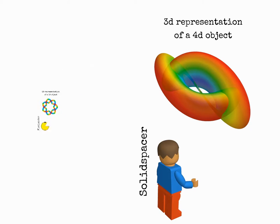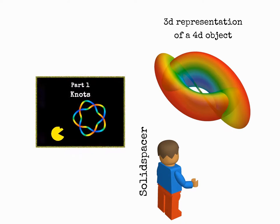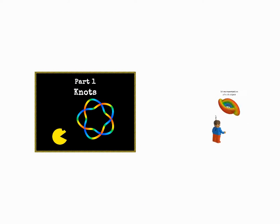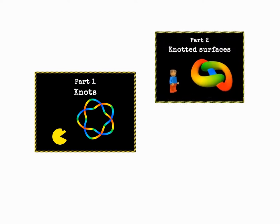To gain this understanding, we will first look at knots from a flatlander point of view. Then, we will follow the same steps to understand knotted surfaces as solid spacers.